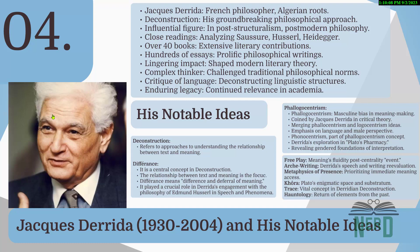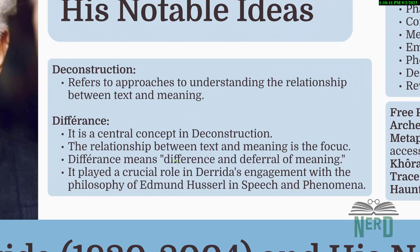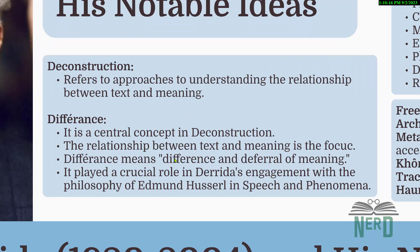Let's talk about his terms one by one. First, deconstruction — it's like his superpower. It's a way of looking at text and saying, let's not take everything at face value. It's all about digging deeper, questioning what words really mean, and seeing how they can have multiple interpretations. Next, différance — this fancy word is all about the dance between words and their meanings. Derrida was obsessed with how words can both differ from and defer their meaning. It's like words always teasing us with different interpretations.